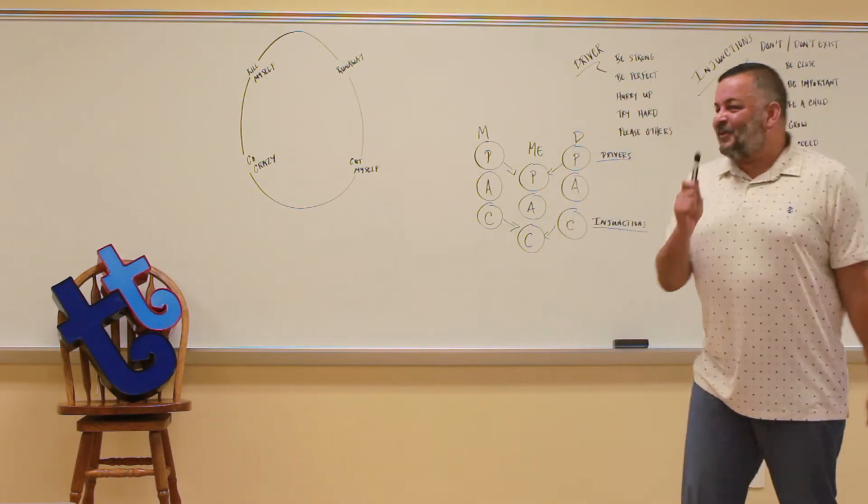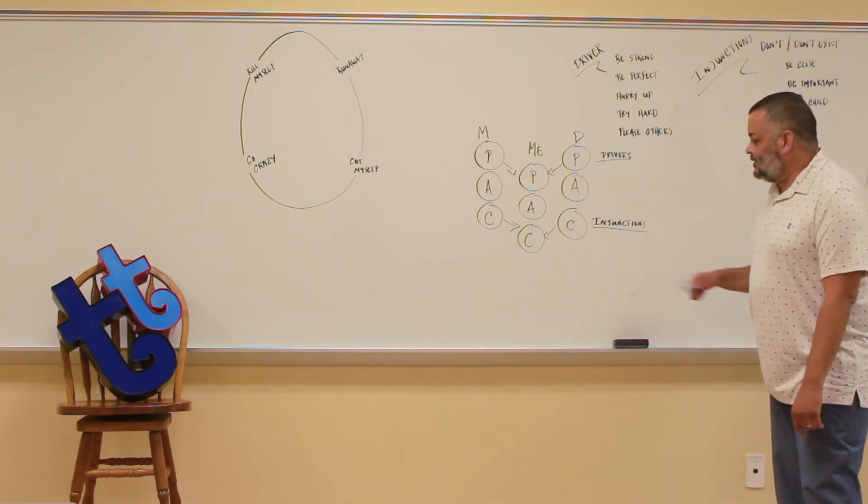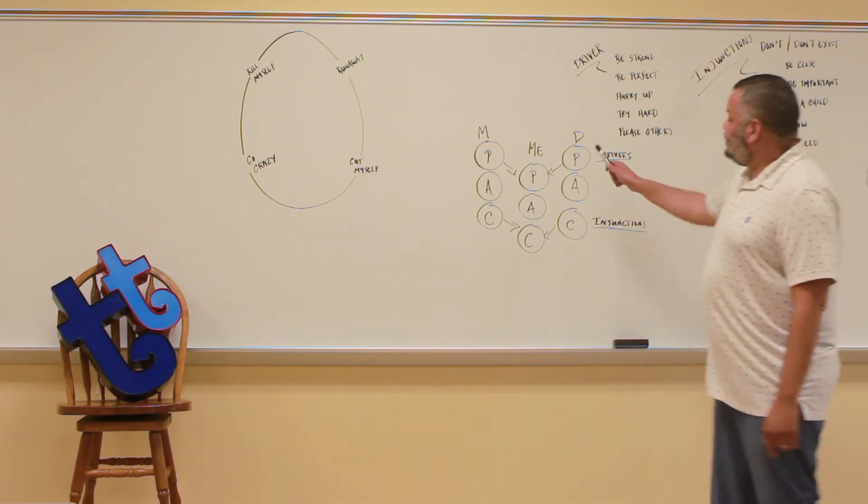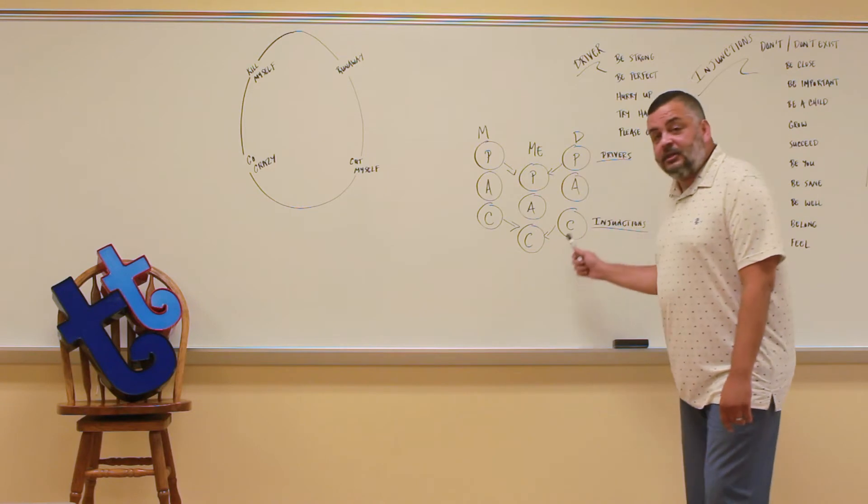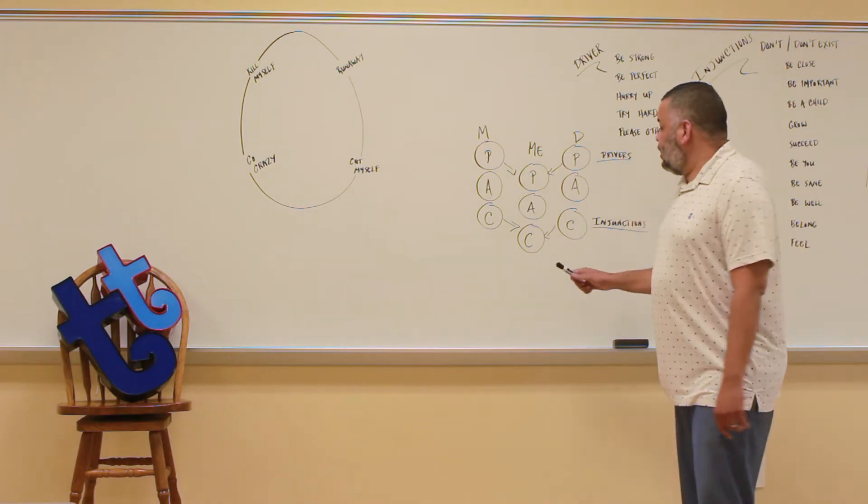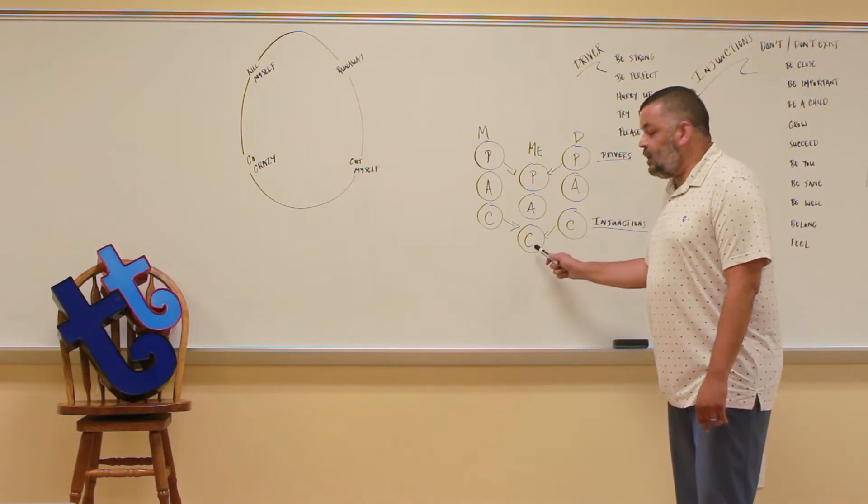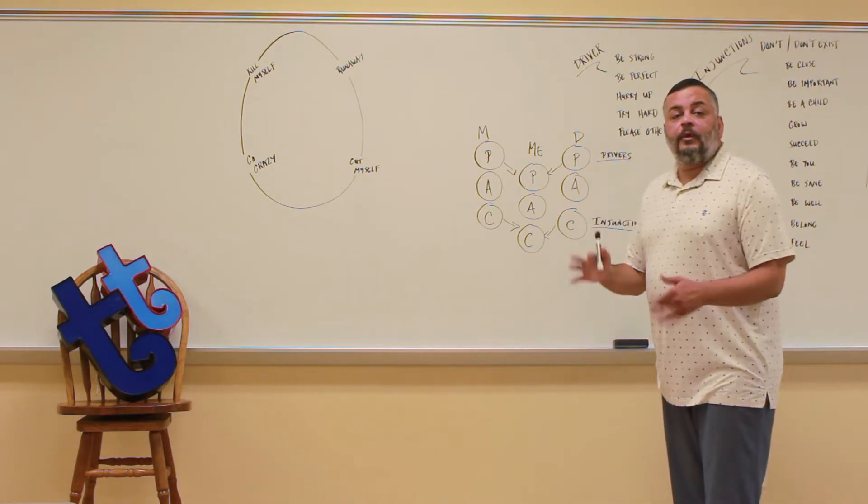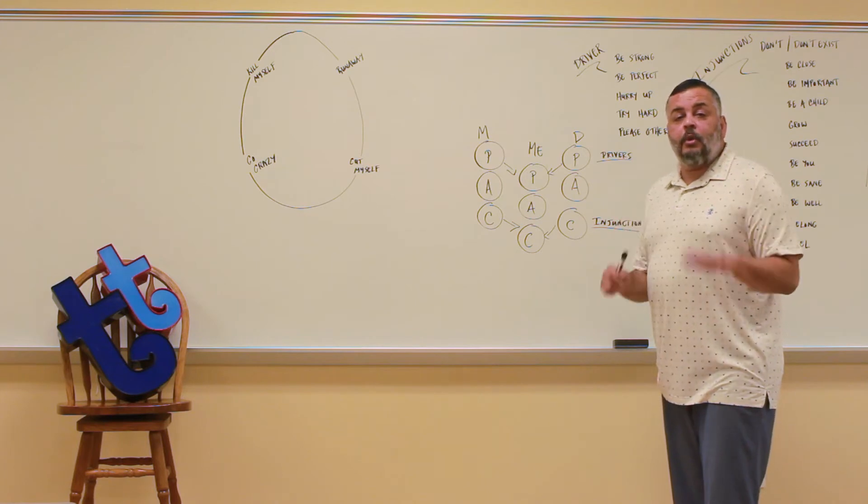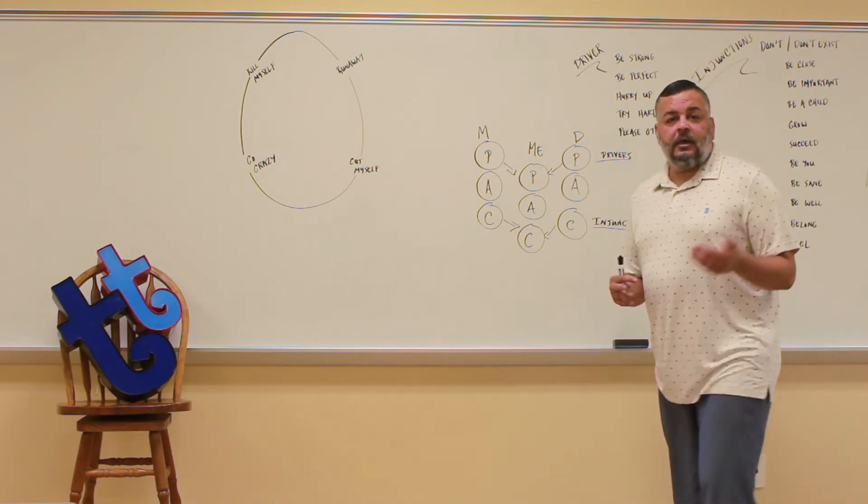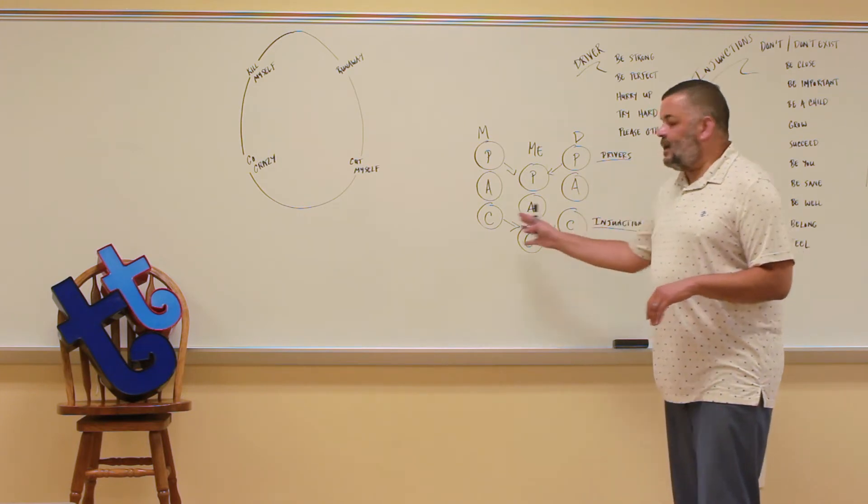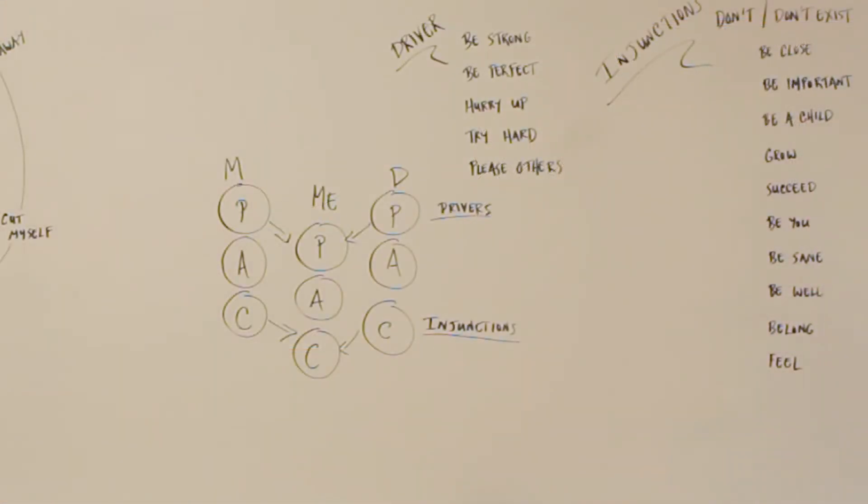But for this Tim Talk, now we're going to look at injunctions. So just like driver behavior, injunctions are spoken from our parents' child ego state and communicated to our child ego state when they're under stress. There are twelve injunction messages that are given during this timeframe. And here they are.